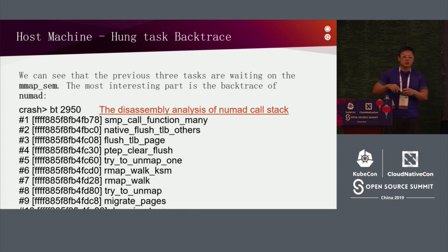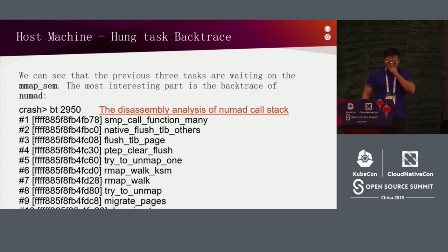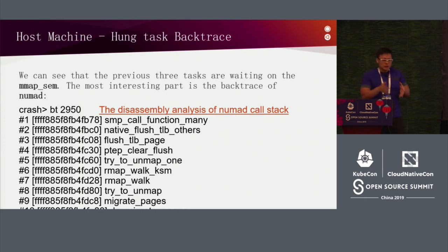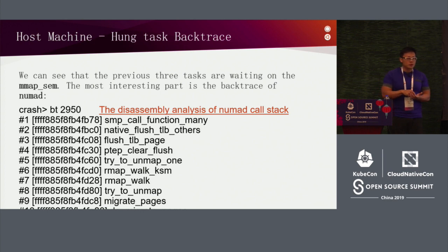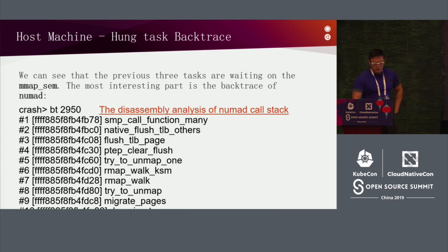NUMA balance checks if a page is accessed remotely. If it is, it migrates the page to the local node to reduce memory latency. Looking at the backtrace, it finds a node that happens to be a KSM page. So it wants to migrate this KSM page. When NUMA balance wants to migrate pages and it happens to find a KSM page, there is an issue during this process.